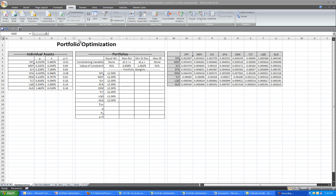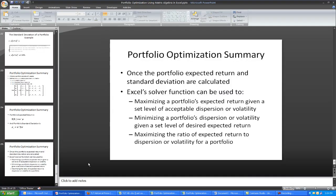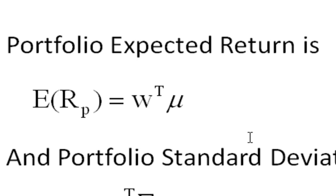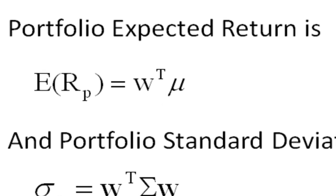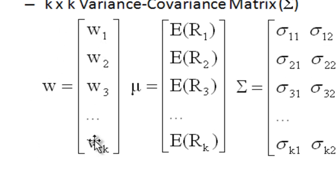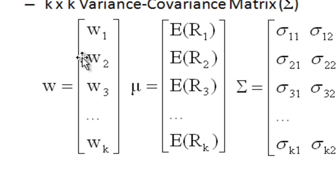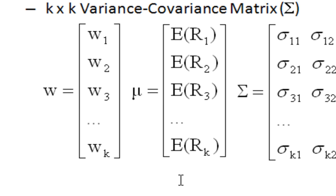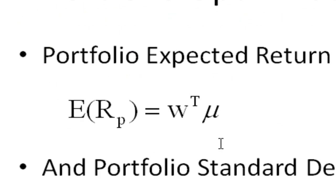Just as a brief reminder, let me take you back to what you saw on the PowerPoints earlier. The portfolio expected return is going to be W transpose mu, where W is your K by 1 vector of the weights in your portfolio, and mu is the K by 1 vector of the expected returns to each of the assets. So to get expected return, we need a weights vector, an expected return vector, and we take W transpose mu.